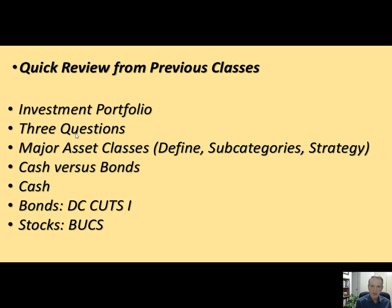Then we talked about the major asset classes: cash, bonds or fixed income, stocks or equities, and alternatives. On each one of these, we're going to go to the subcategories that you want to be able to find, list the subcategories, and talk about the strategy under each one.